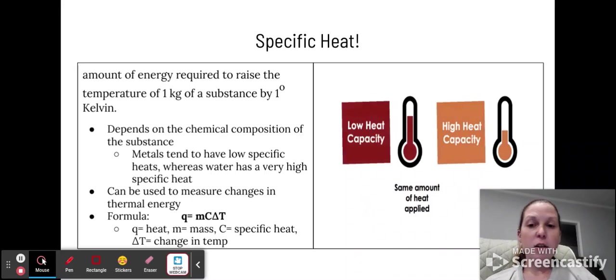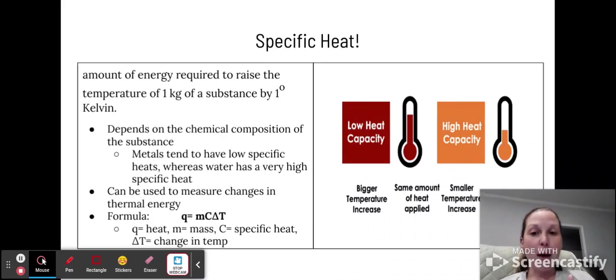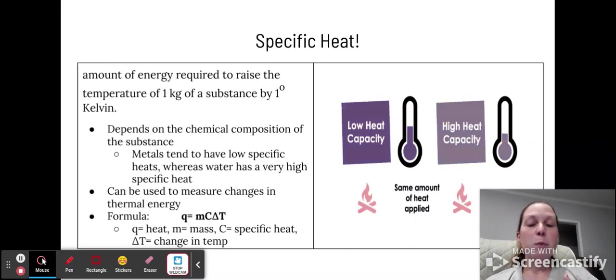Q here is our variable for heat, which is measured in joules. M is mass, which is measured in grams or kilograms. Specific heat is joules per gram degree Celsius. Those would be given to you if needed. And then delta T is your change in temperature. Remember that triangle means change. So it's always final minus initial.